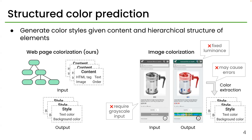In the coloring task, image colorization is the dominant setting in the community, but it requires greyscale input and the output luminance is fixed by the input. Also, we have to extract colors for CSS from the output image, which can lead to extraction errors.